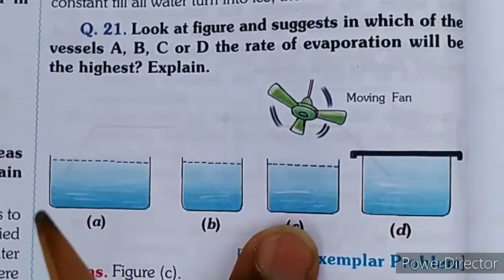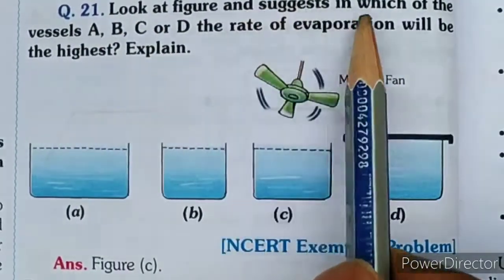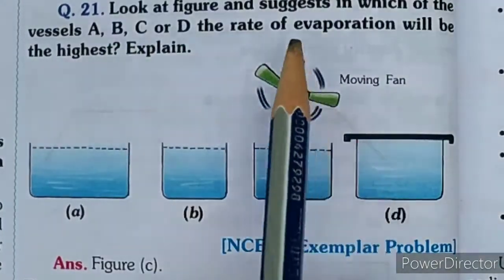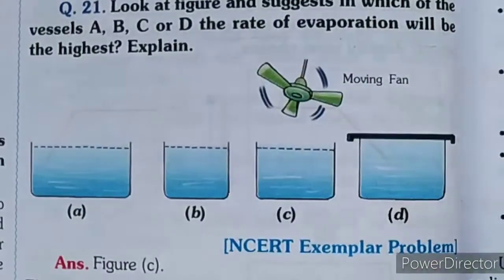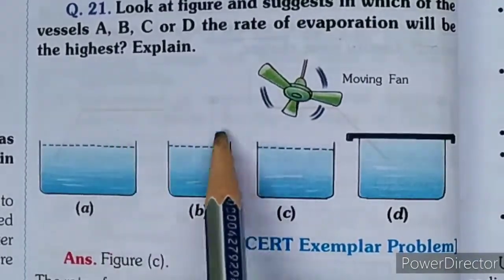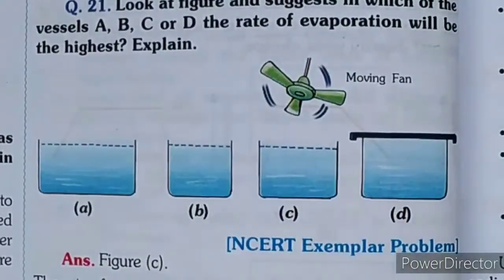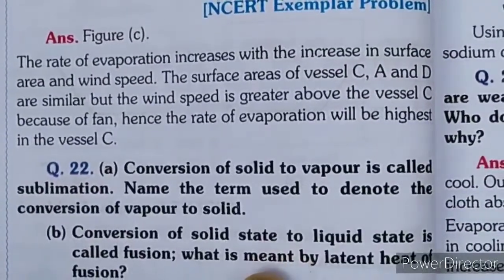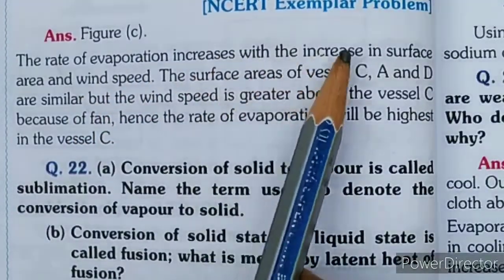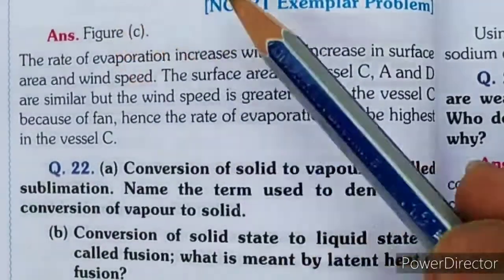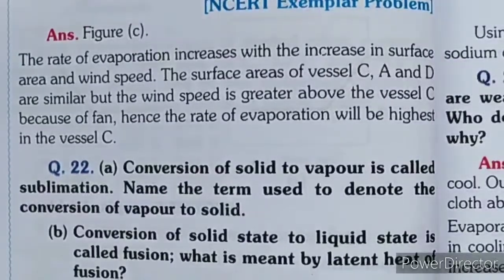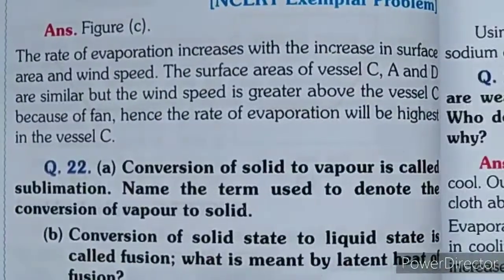Question 21: Look at the figure and suggest in which of the vessels A, B, C, or D the rate of evaporation will be highest. The rate of evaporation increases with increase in surface area and wind speed. Options C and D have similar surface areas, but wind speed is greater above vessel C, so when wind speed is higher evaporation will be faster - therefore option C is correct.